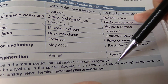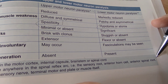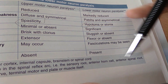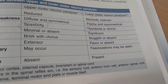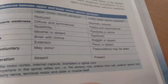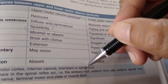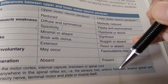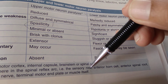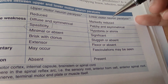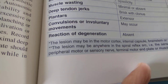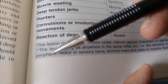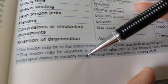Lower motor neuron involves the sensory root, anterior horn cell, and anterior spinal root. Remember: spinal cord means upper motor neuron, but if it is the anterior spinal root, anterior horn cell, or sensory root, then it will be lower motor neuron paralysis. Lower motor neuron also constitutes the peripheral motor or sensory nerve terminal.